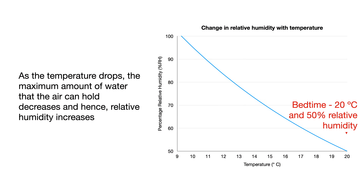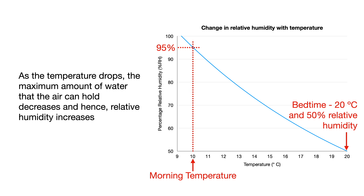Take a look at this graph. If when I went to bed it was 20°C at 50% relative humidity and the temperature on the boat dropped to 10°C overnight, the relative humidity would increase to 95%. Remember the dew point is 9°C. There's been no change in the total amount of water vapor in the air, but because the air can now hold less water vapor, the relative humidity has increased.